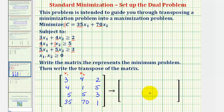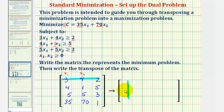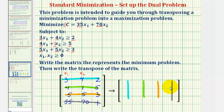Now we want to transpose this matrix, which we'll then use to form the corresponding maximization problem or dual problem. To transpose this matrix, the rows will become the columns. So row one will become column one, row two will become column two, row three will become column three, and row four will become column four.